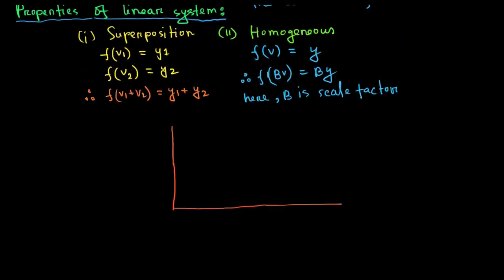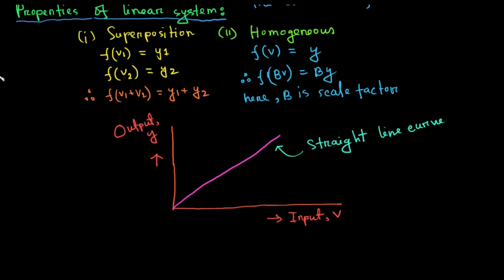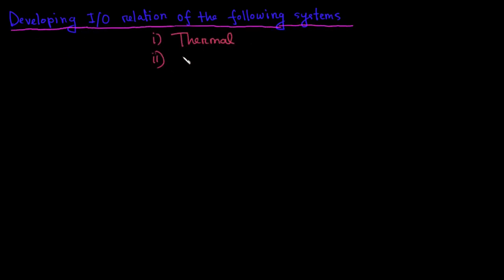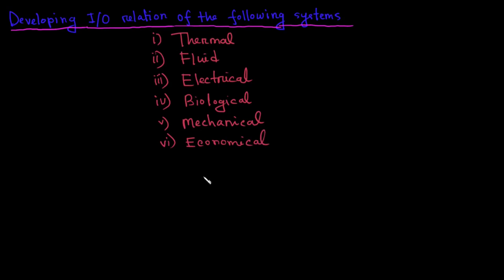Now, the input output curve of a linear system is a straight line plot which is y equal mx plus b. For our case, input is v and the output is y. We also assume that the intercept is zero. As a control system enthusiast, we are mainly interested in developing the input output relation of the following systems and those are thermal system, fluid system, electrical system, biological system, mechanical system and finally the economical system.